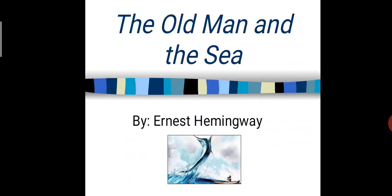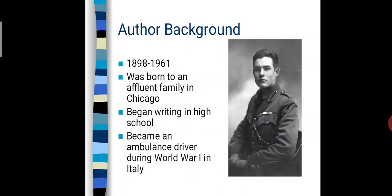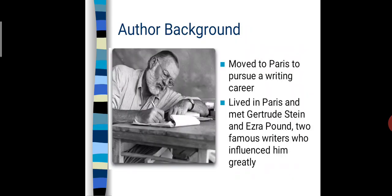Now, 'The Old Man and the Sea' by Ernest Hemingway — the author's background. His lifespan is 1898 to 1961. He was born to an affluent family in Chicago. He began writing in high school and became an ambulance driver during World War One in Italy. His life from childhood was a very struggling one. His lifespan meant he saw two world wars.